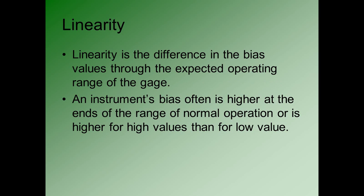The last characteristic we're going to talk about is linearity — the difference in the bias of the values through the expected operating range of the gauge. Instruments often have low bias, especially after calibration in the center of their operating range, but they may not hold that low bias at the ends of the operating range. For example, if you look at most bathroom scales, they're useful for measuring up to about 300 pounds. A scale measuring a person of average weight, say 150 pounds, is likely to have very little bias.